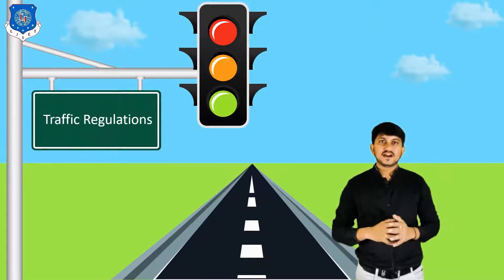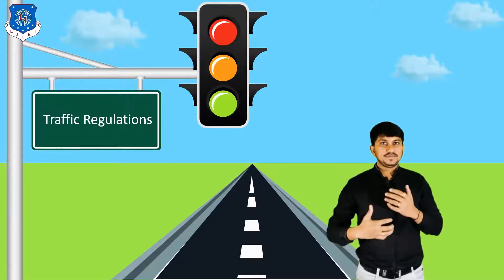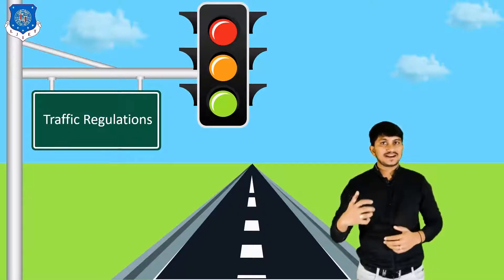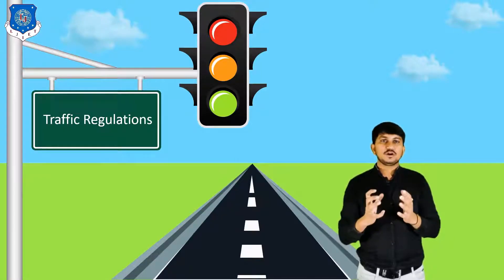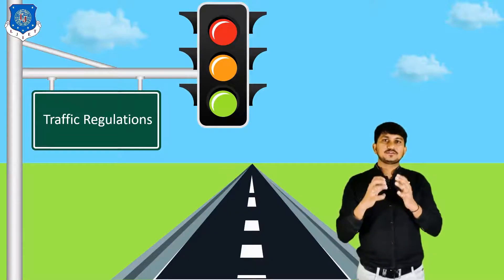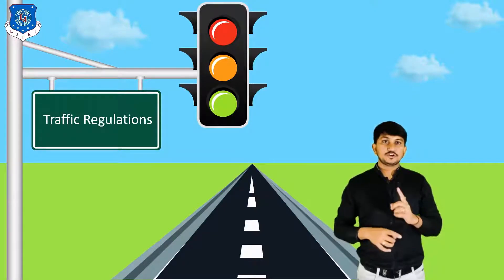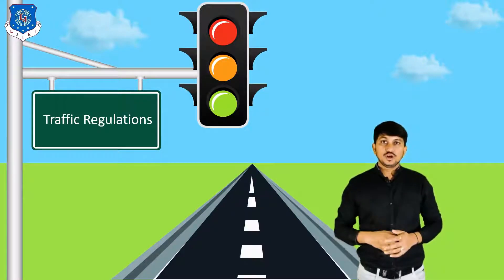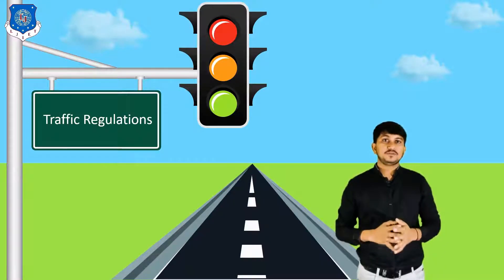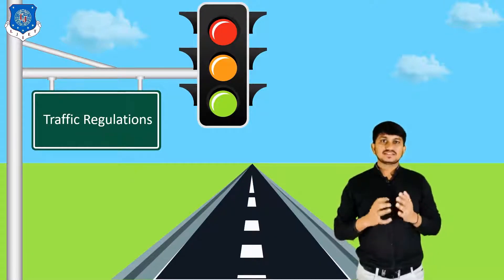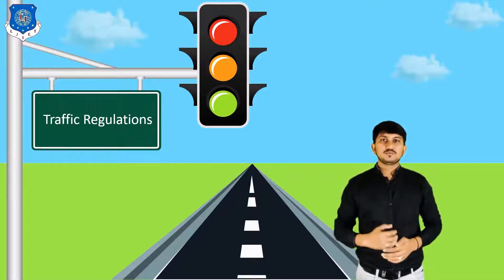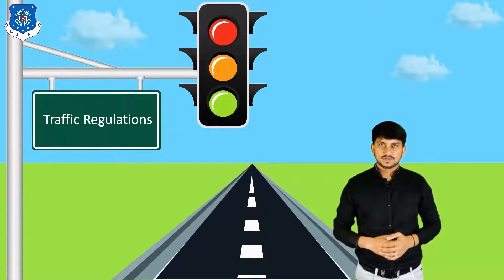Traffic Regulations can be defined as the rules and regulations which may be used for the action of road users. This is in place in order to prevent accidents and enhance the free flow of traffic. Some traffic rules and regulations are like do not drink and drive, and users of the road should avoid alcohol before and while driving. In order to have safe traffic operations on road, it is essential to impose adequate traffic regulations.